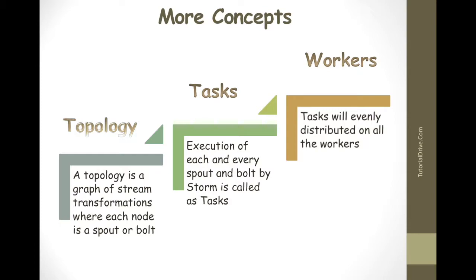Next is workers. A topology runs in a distributed manner on multiple worker nodes. Storm spreads the task evenly on all the worker nodes. The worker node's role is to listen for jobs and start or stop processes whenever a new job arrives.